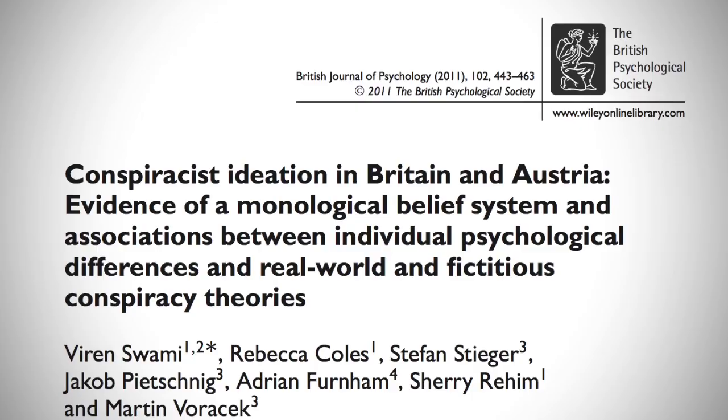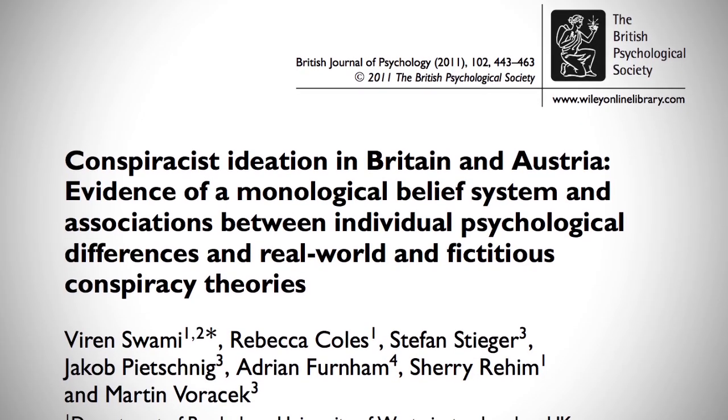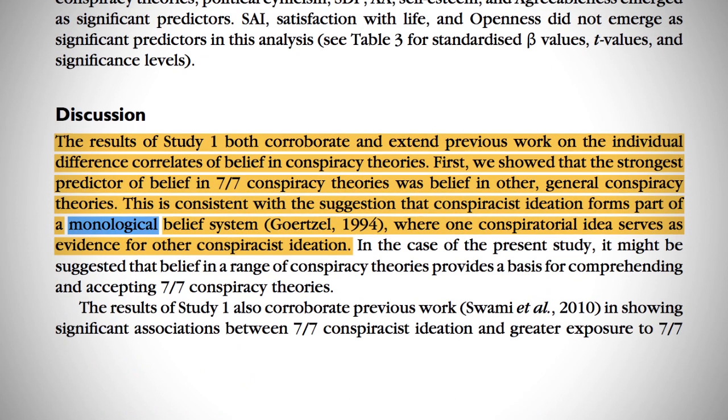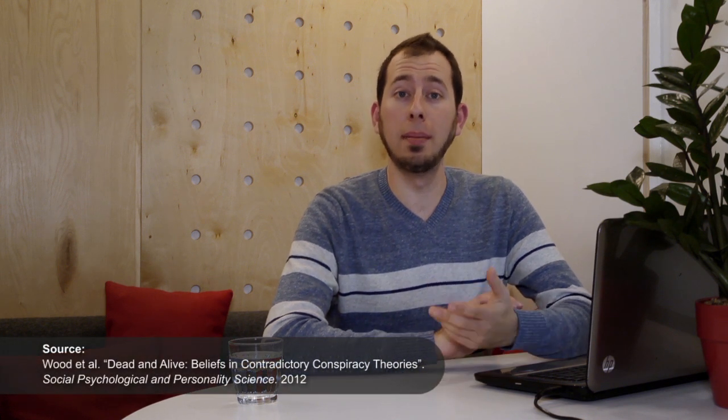All of these biases and traps in thinking will often converge to form what psychologists call a monological belief system, where conspiracies are perceived everywhere and anywhere and can explain anything. It's so dominating of an ideology that it even motivates some people to believe in contradictory conspiracy theories at the same time.